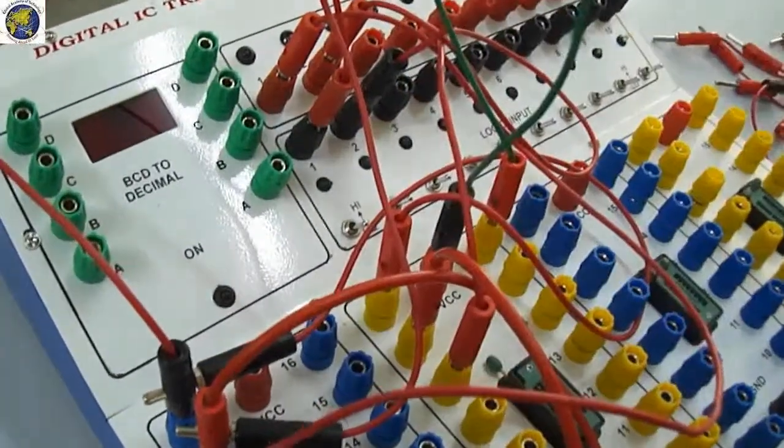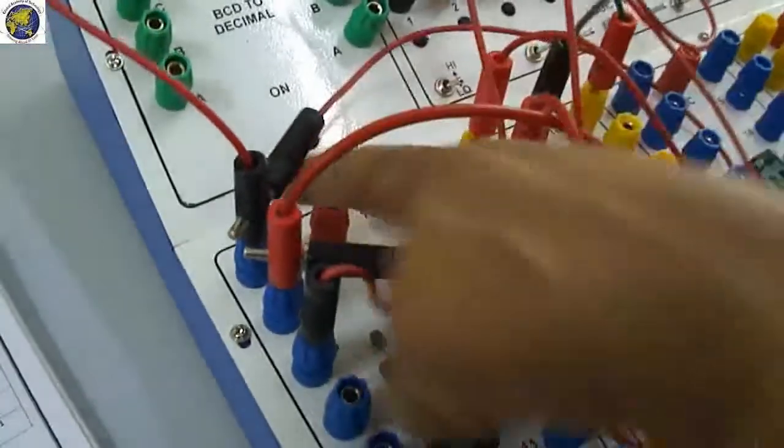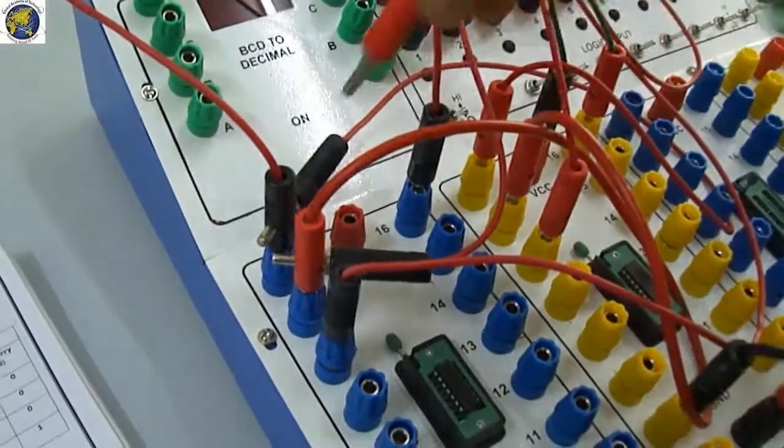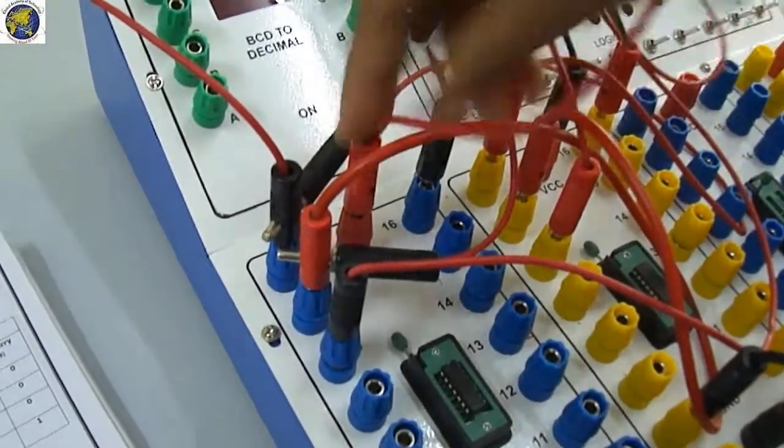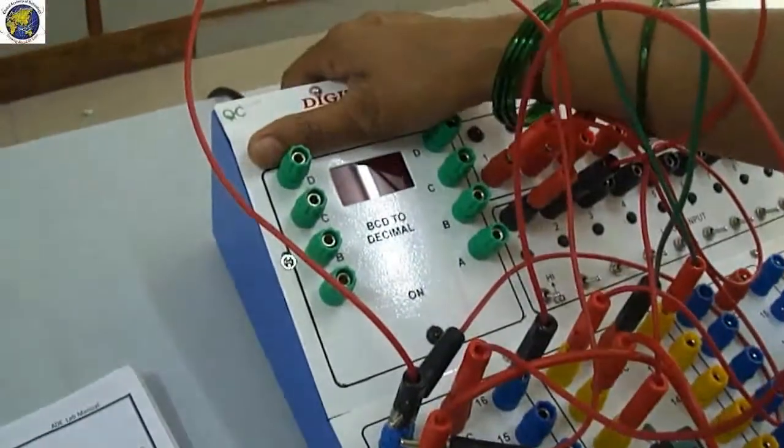Next, switch on the trainer. If both the inputs are 0, you will get sum is 0 and carry is 0. See it. If both the inputs are 0, you will get 0, 0.